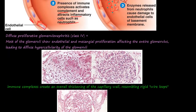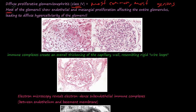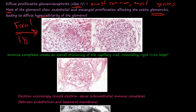The most common type is diffuse proliferative glomerulonephritis — the most common and most serious. Most of the glomeruli — instead of focal 50%, we're now talking about most of them — show endothelial and mesangial proliferation affecting the entire glomerulus, leading to hypercellularity of the glomeruli. That's class 3 versus class 4.